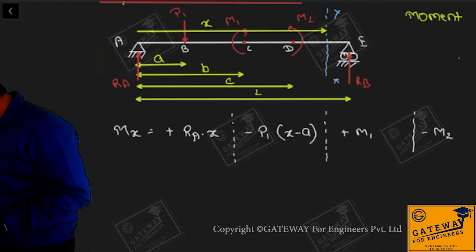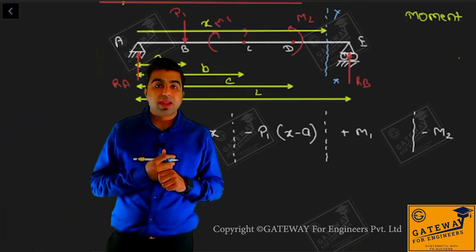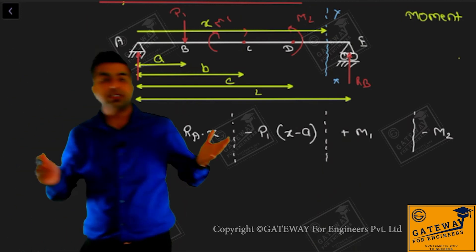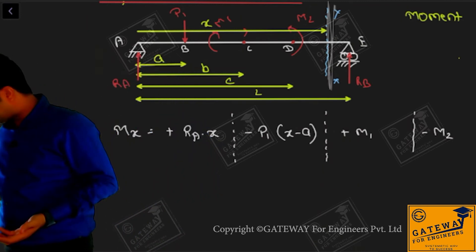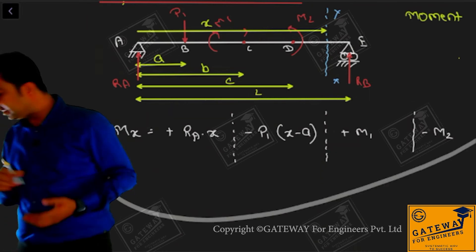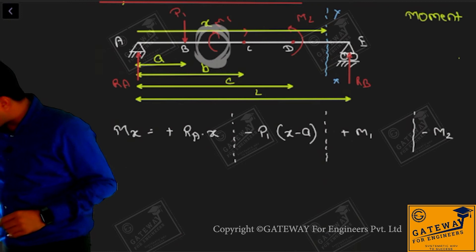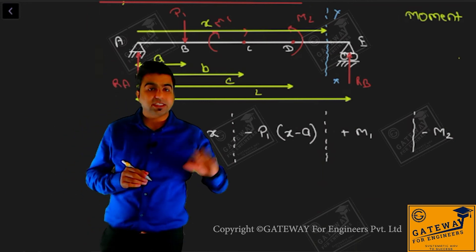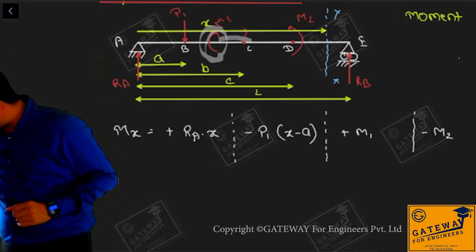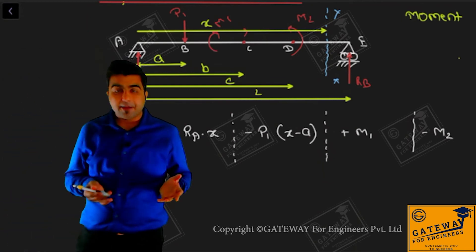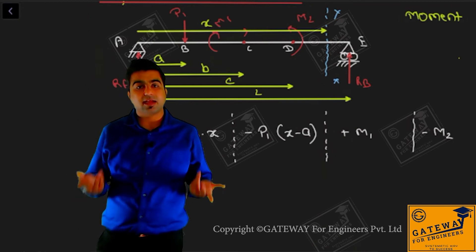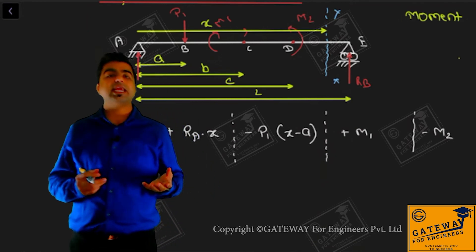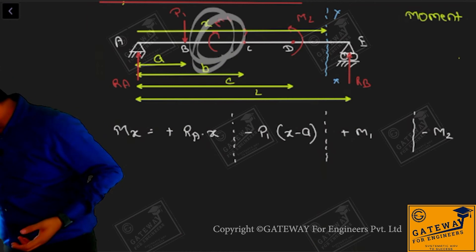If I lift M1 from point C and place it somewhere between B and C, will there be any change in the equation? You will say no, no change - the same equation comes. So M1 placed anywhere gives no change in the equation from this section. This is not correct - there must be a Macaulay discontinuous function used in this equation which will fix the position of M1.